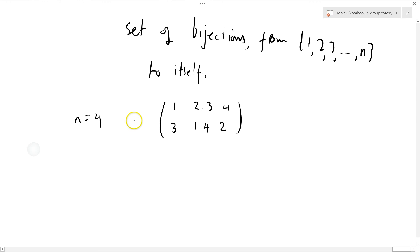So if I say that that's f, then I can say f(1) = 3, f(2) = 1, because that's 2 and it goes to 1. f(3) = 4 from this row here, from that column there, and f(4) = 2.